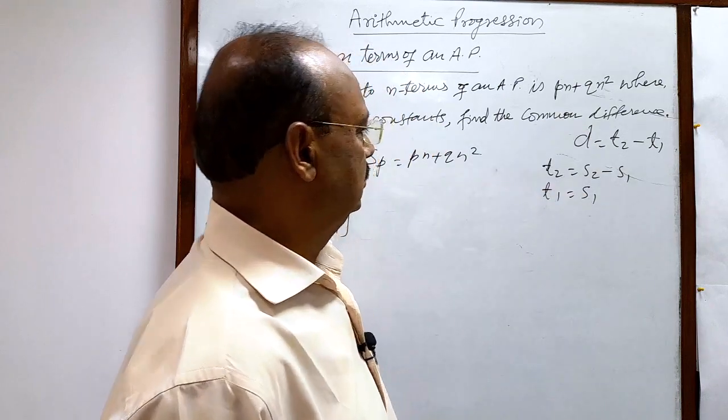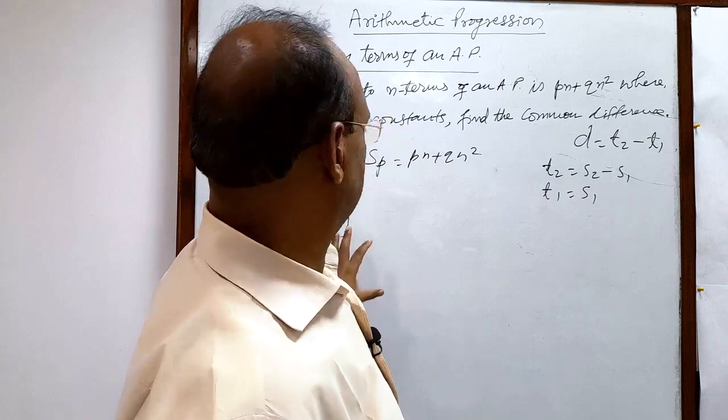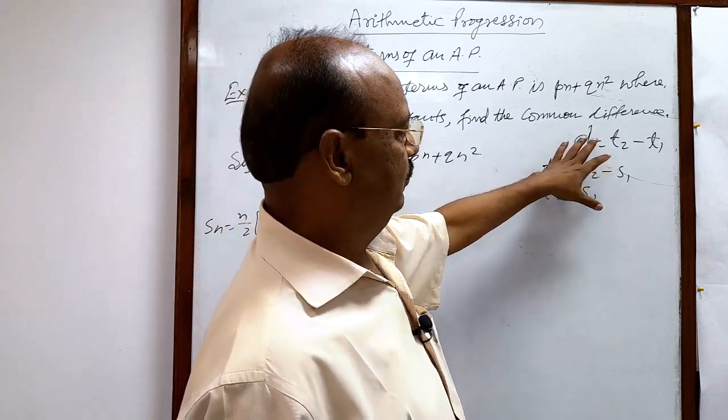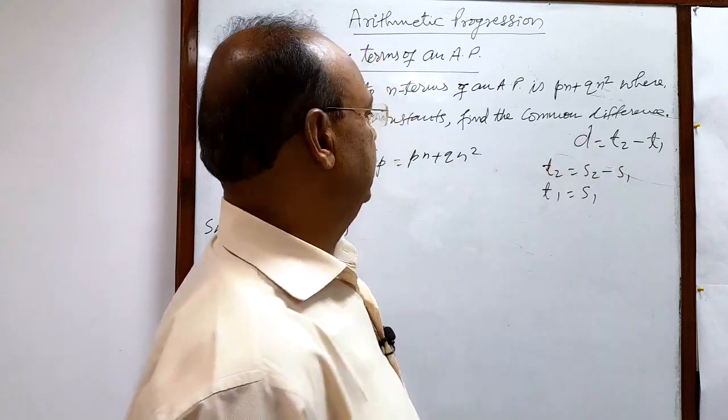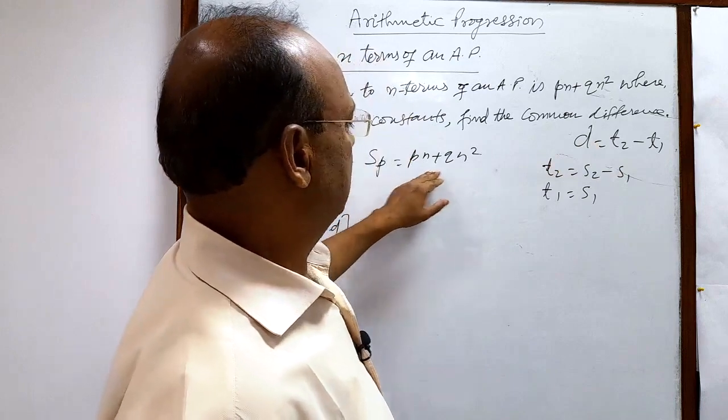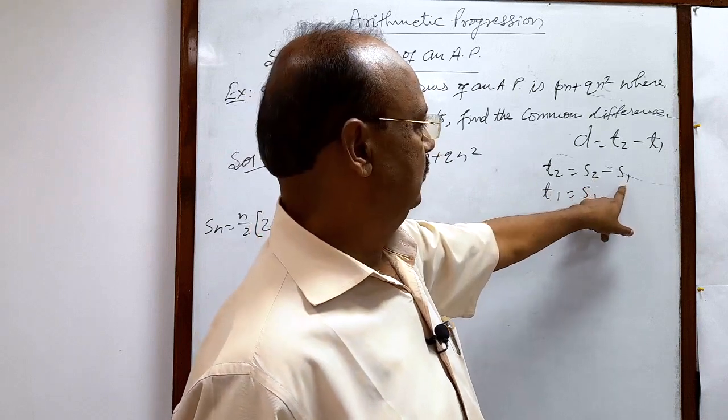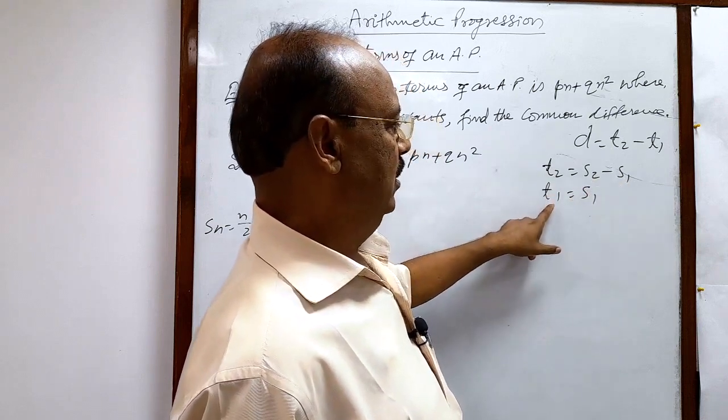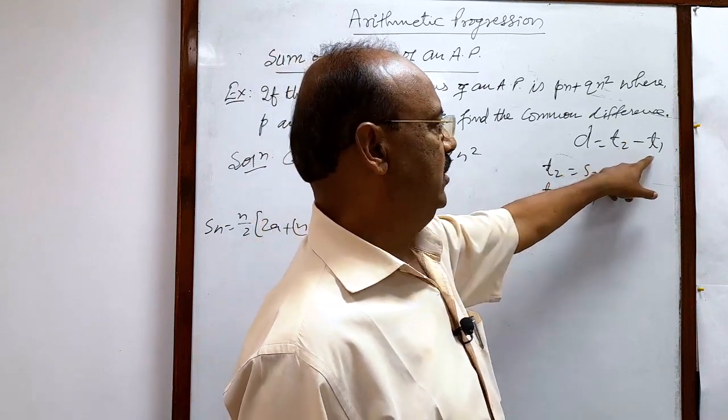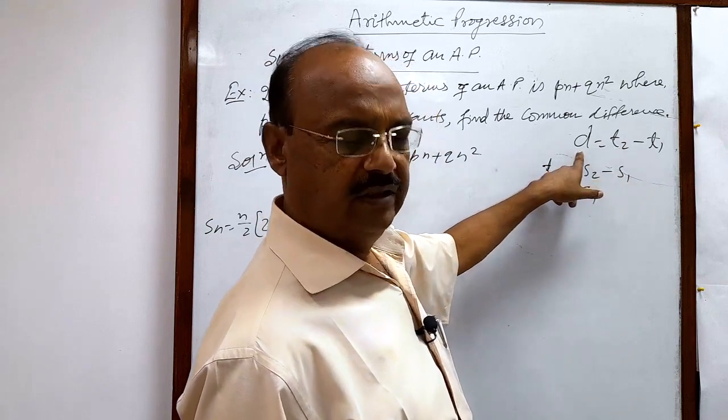This will be our approach to find the value of d. Sn is equal to this much, so we need to find S2 and S1 for getting t2 and t1. And after getting t2 and t1 we can get value of d very easily.